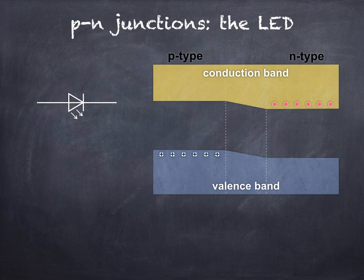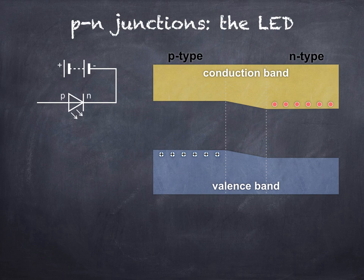We saw in the last video how a p-n junction operates when forward biased. It's important to remember that an LED is basically just a p-n junction which emits light when forward biased. That is, when the negative terminal of a battery is connected to the n-type side, and the positive terminal to the p-type side.